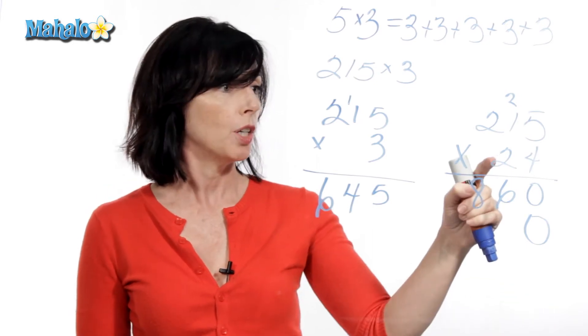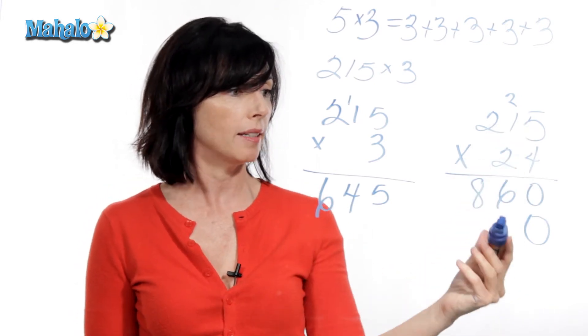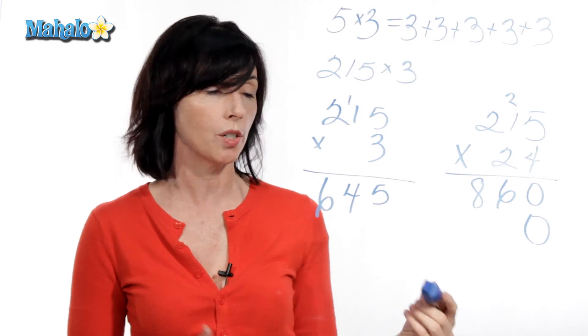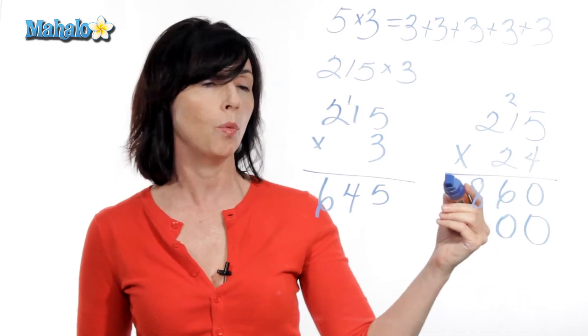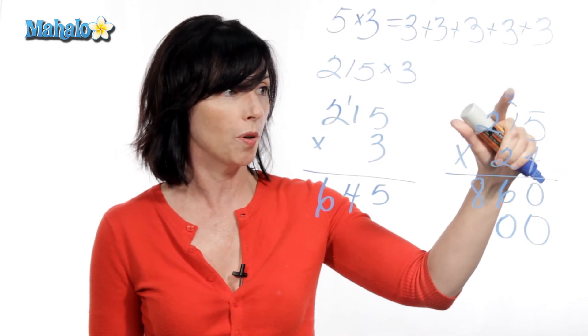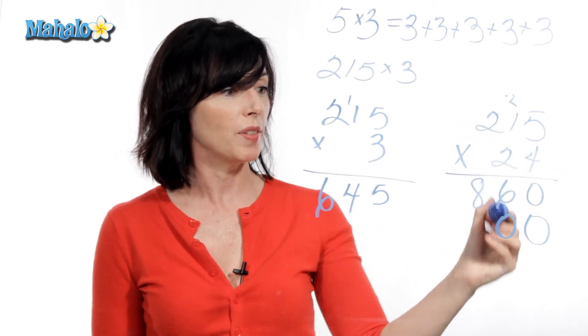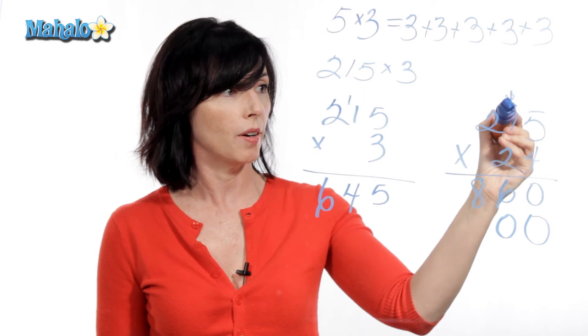And now we just do the same thing. Two times five is 10. So I'm gonna put the ones position of 10, which is a zero, down here. And then I'm gonna carry that one over. I'm gonna get rid of this two, because that was from before. Two times five is 10, put down the zero, and carry the one.